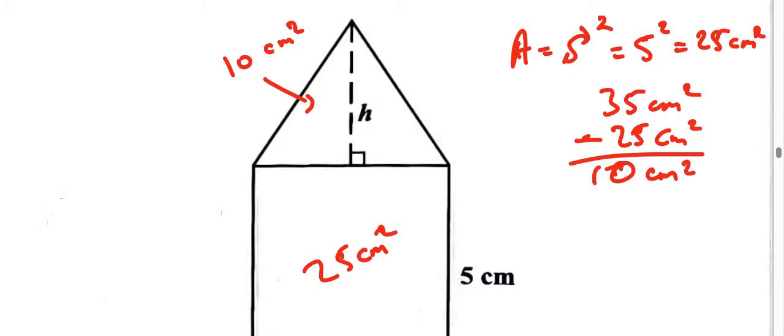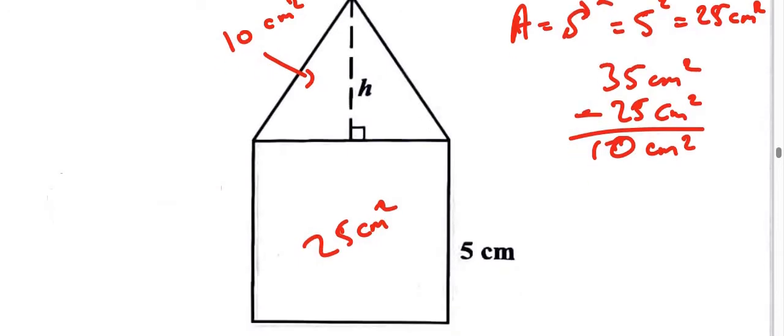So what is the height? Remember the area of a triangle is half times the base times height. Now if this is a square, that means this length here must also be 5 centimeters right? That length must also be 5 centimeters because in a square all the sides are equal. So that means the base of the triangle is 5.